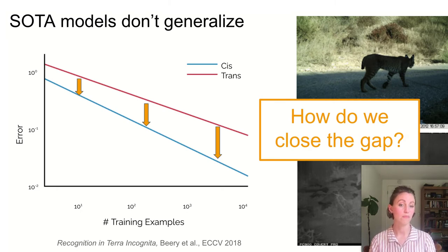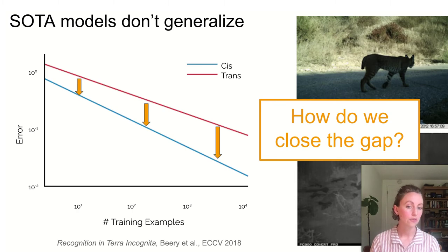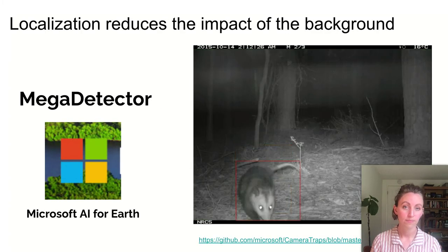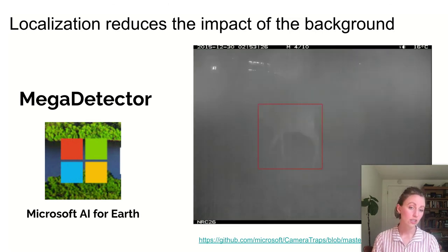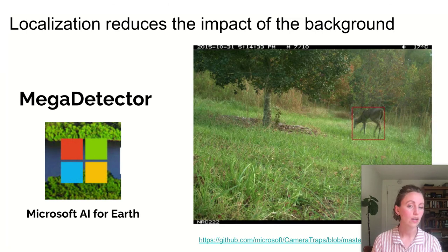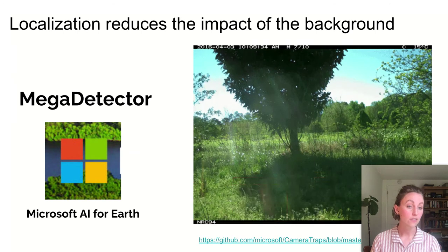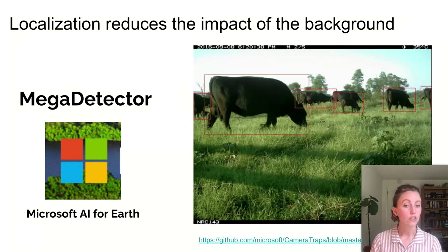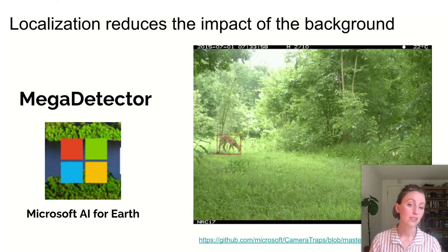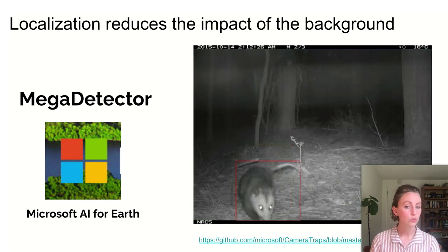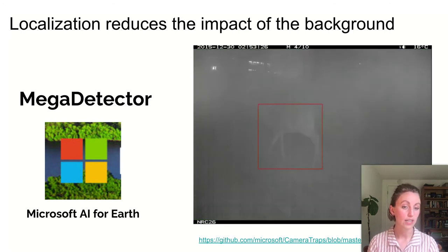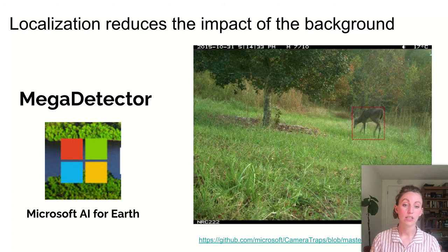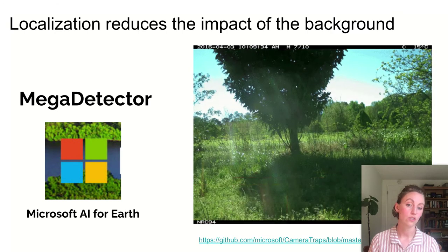Labeling and retraining our models for every new sensor doesn't scale. We want to build models that generalize as well as possible to novel sensors without retraining. We found that class-agnostic localization generalizes quite well, even to regions and species never seen during training. Together with collaborators at Microsoft AI for Earth, we have open-sourced a globally robust class-agnostic detection model, which works well without project-specific retraining and is now widely used by ecological research groups and conservation organizations.